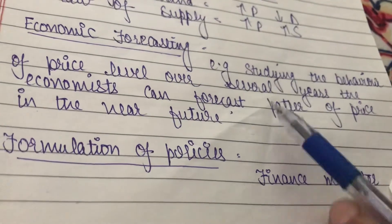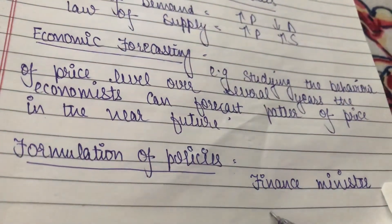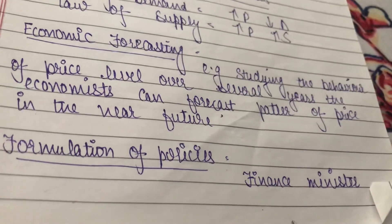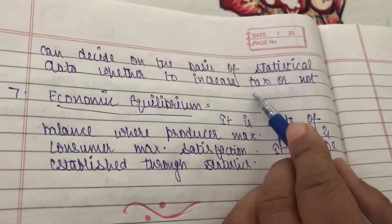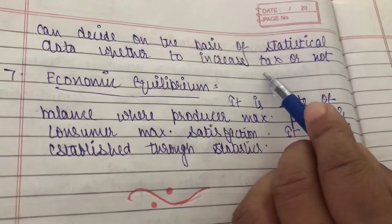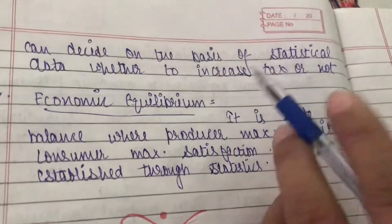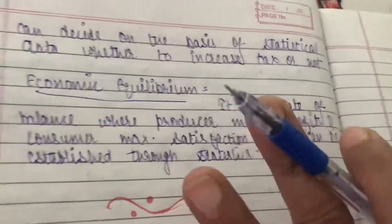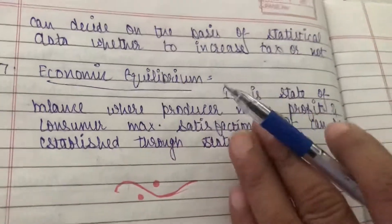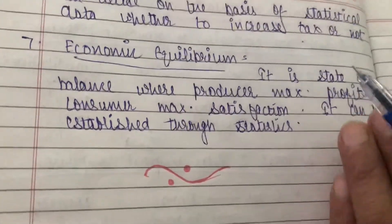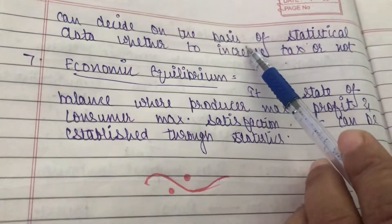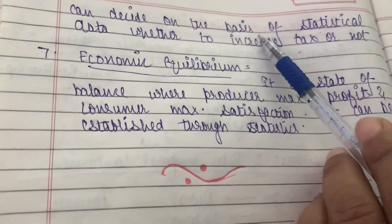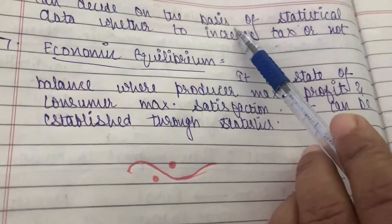The next importance is formulation of policies. By statistics, our Finance Minister can formulate policies. The Finance Minister can come to know how much tax should be increased. If people's incomes are rising, then obviously taxes should be higher. By statistics we come to know whether income is increasing or decreasing, and accordingly the government takes steps based on how much revenue it is getting.